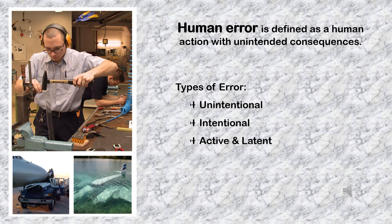Intentional errors occur when one purposely deviates from safe practices, procedures, standards, or regulations. In such instances, the aviation maintenance technician has most likely violated company policy and/or Federal Aviation Administration regulations. An active error is one where an action results in a foreseeable event, such as when a mechanic falls from a ladder when he or she knew beforehand the ladder was defective. A latent error occurs when a defective ladder is left in service when it was known it should have been replaced.